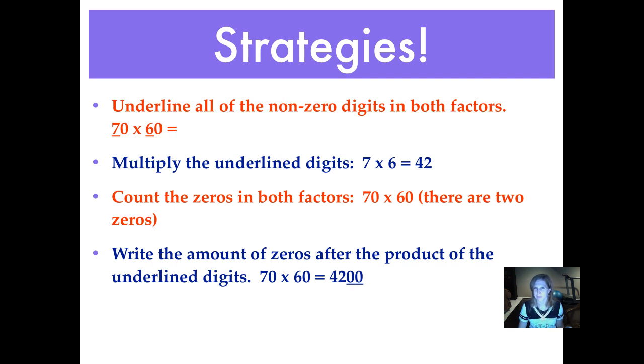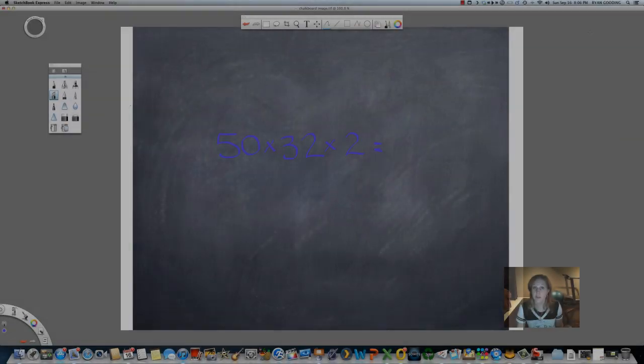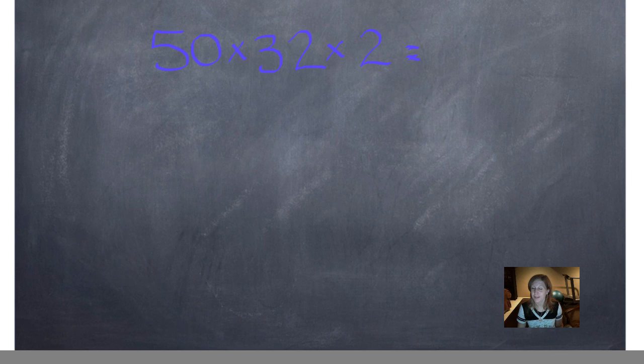I have a feeling I'm going to be doing some pushups tomorrow, but I'm not going to tell you why. Let's do an example now. We're going to use both the multiplication properties and mental math to make working this problem a lot easier. I don't know what 50 times 32 is, and I don't know what 32 times 2 is, but I can move these factors around to make multiplying them together a lot easier.